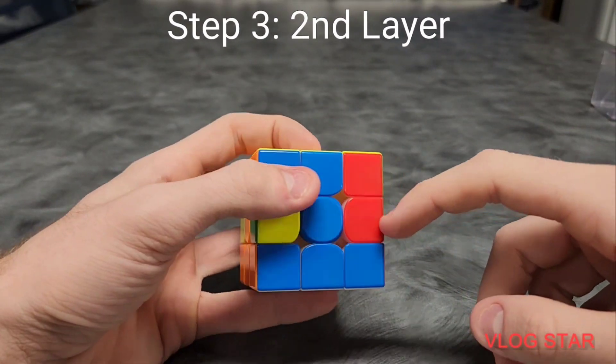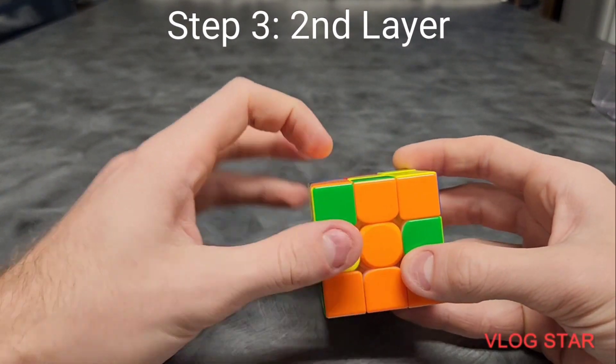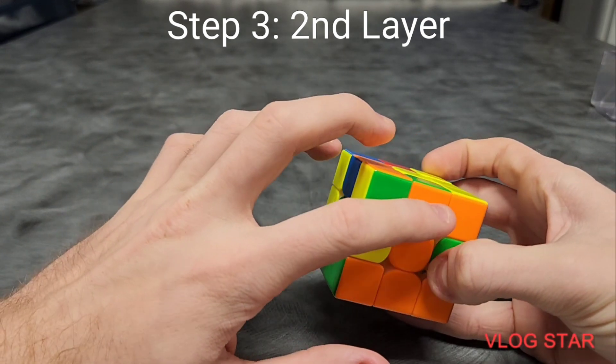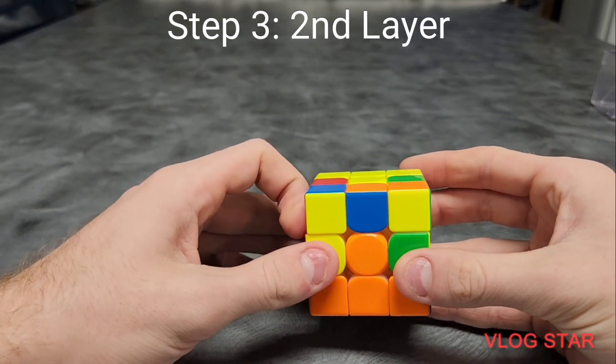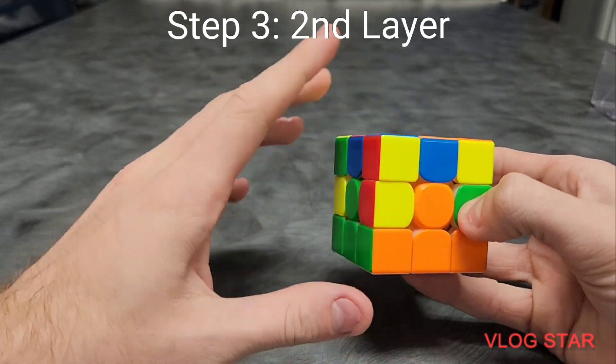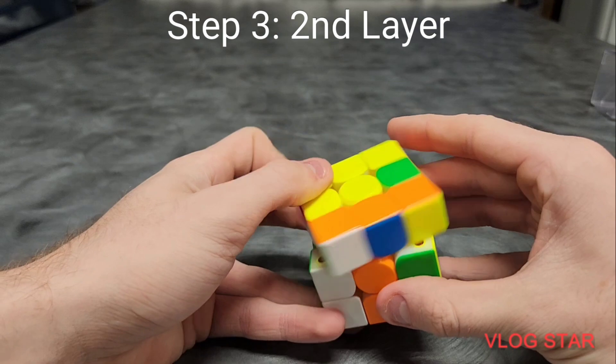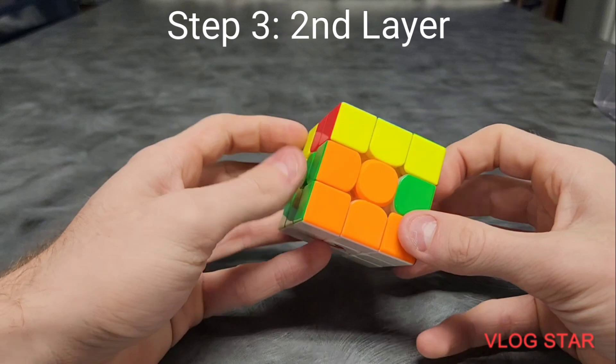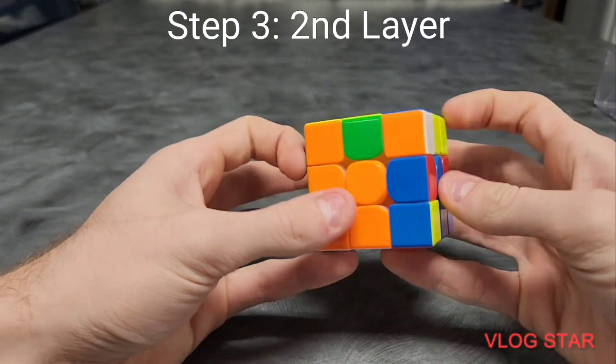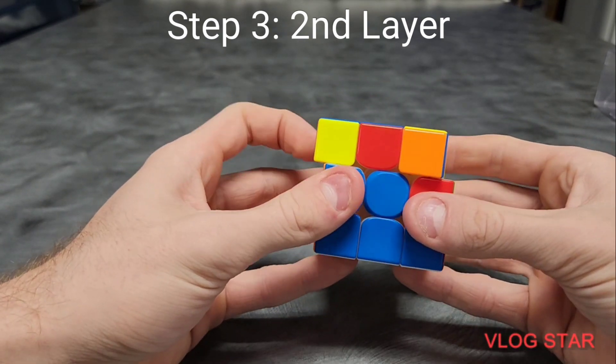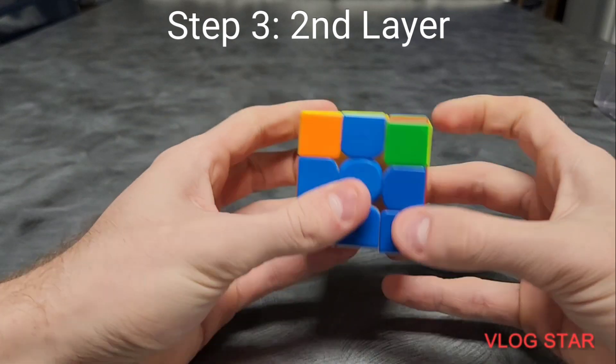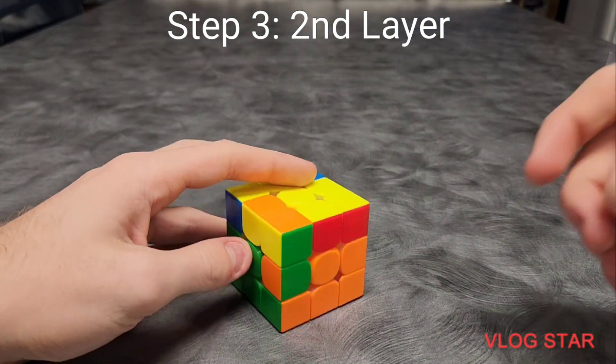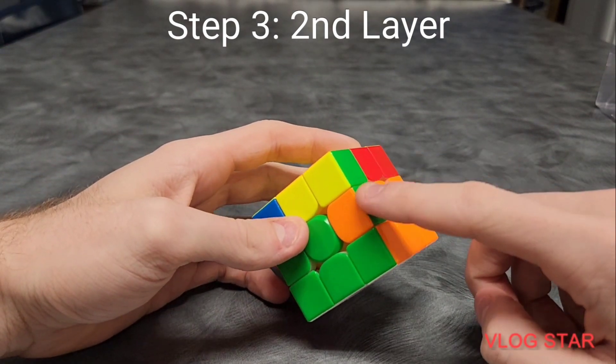Now, we have to complete the second layer. This means putting the non-white and non-yellow edge pieces into the right spot the right way. To do this, take any edge piece on top that you are wanting to solve. Match it up with the center piece that matches the color facing you. Then, put it on the opposite side of the center piece that matches the color on top of the edge piece. Then you are going to use algorithm 1 if the edge piece is on the left, and algorithm 2 if the edge piece is on the right. Then, you are going to face the center of the color on top, and then use the other algorithm you didn't use to put it in the right spot. Do this over and over until the second layer is solved.